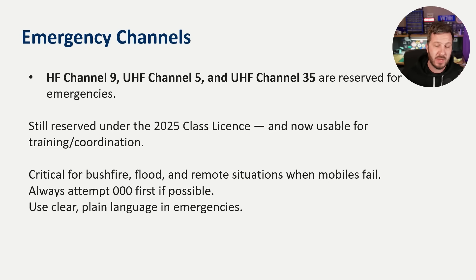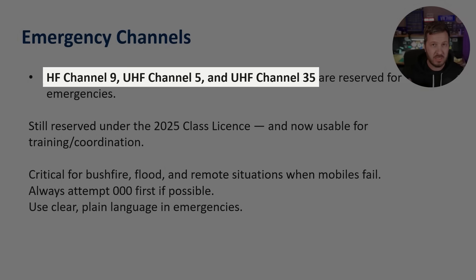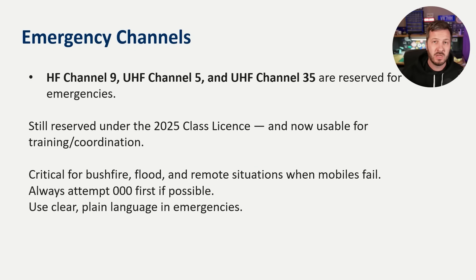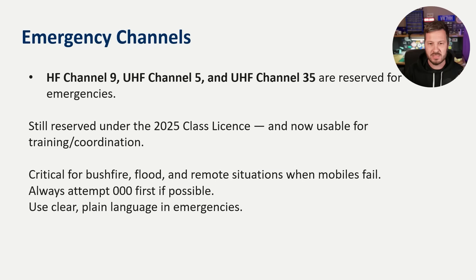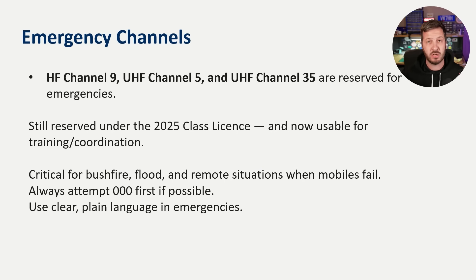On both HF and UHF there are emergency channels — HF channel 9, and UHF CB channels 5 and 35. These are reserved for emergencies only and locked in as such under the license. They're also used for coordination and training under the new 2025 rules. Importantly, emergency channels are not monitored by emergency authorities — there's no one in a control room listening. They only work if someone else is listening, so always call triple zero if you can. These channels are a last resort for areas without phone coverage.